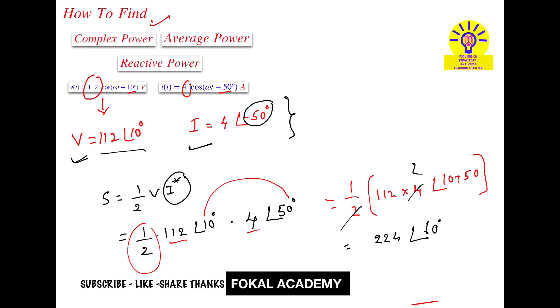Now convert this phasor form into complex form. By using a calculator we get 112 + j194. This is the complex power in phasor form and in complex number form. Units are volt-amperes.